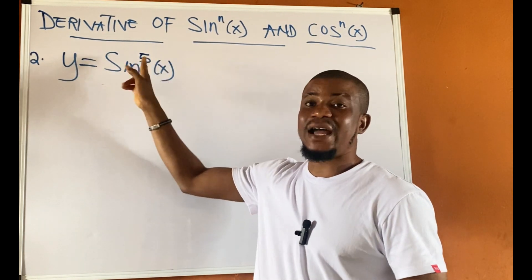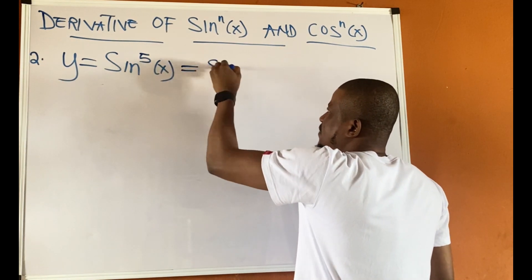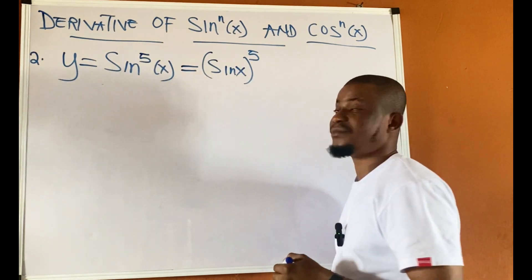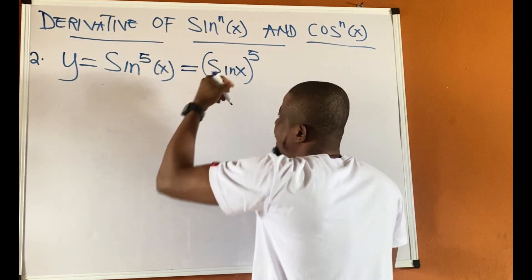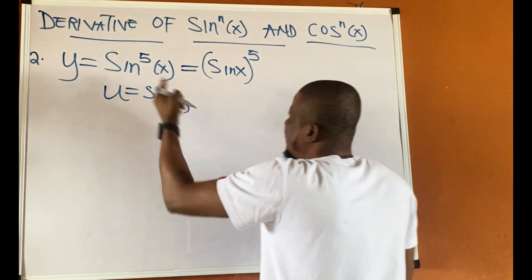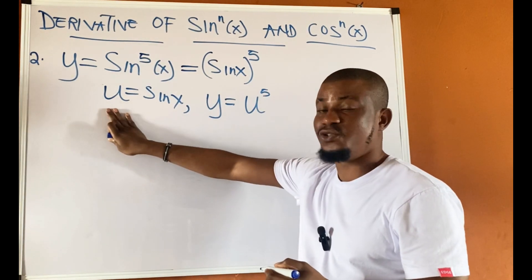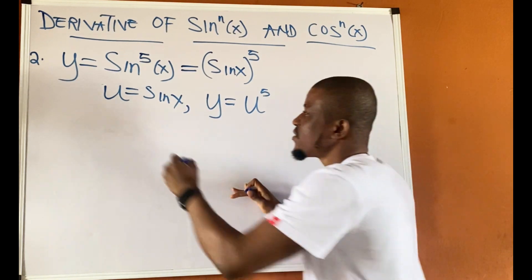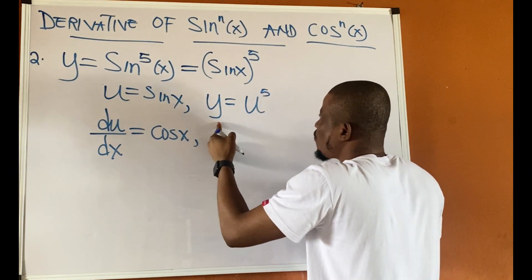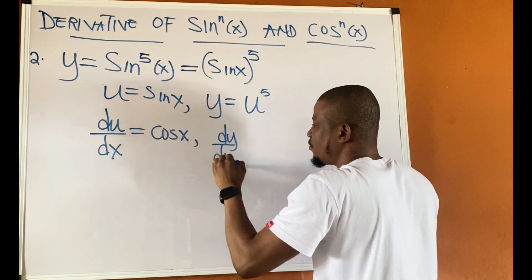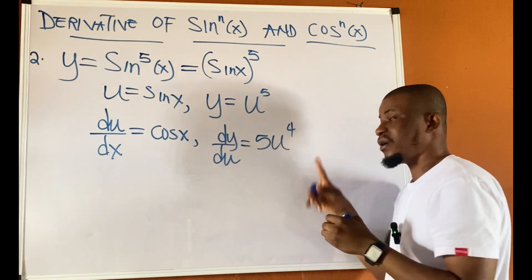Let's look at this example: y equal to sin to the power of 5 of x. To differentiate this, first we rewrite this function as sin x to power 5. From this we define our u to be sin x, the inner function, and rewrite y to be u to power 5. The next step is to differentiate u with respect to x, giving cos x, and differentiate y with respect to u, giving 5u to power 4.